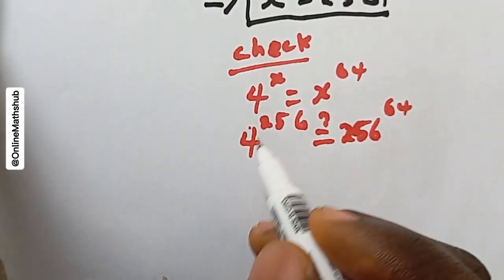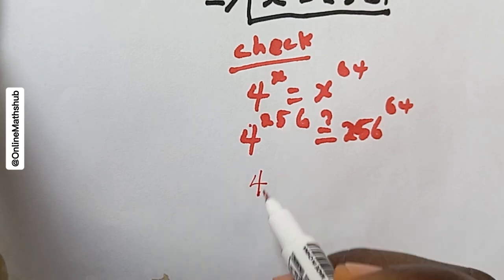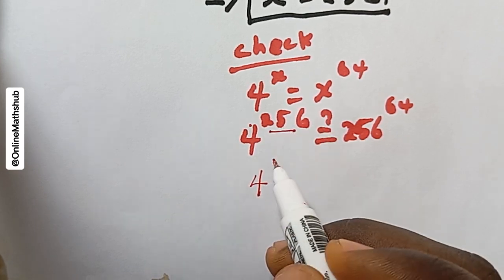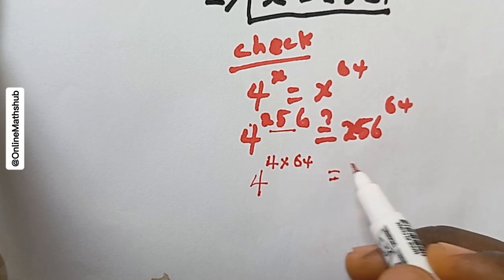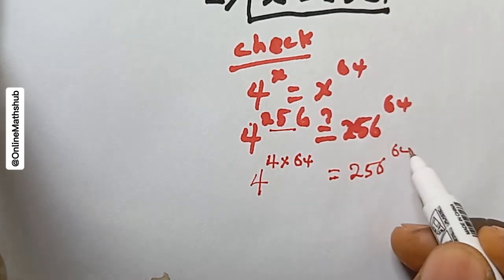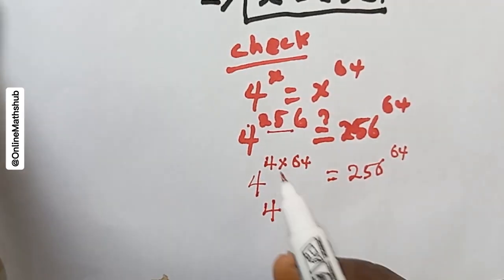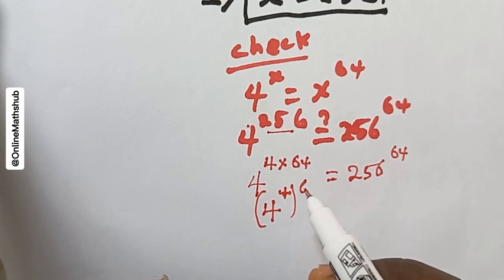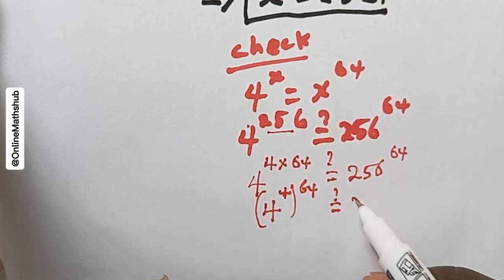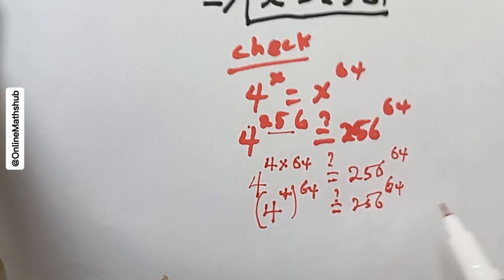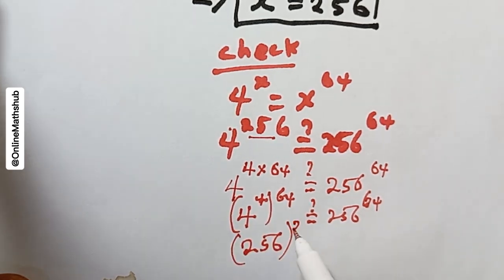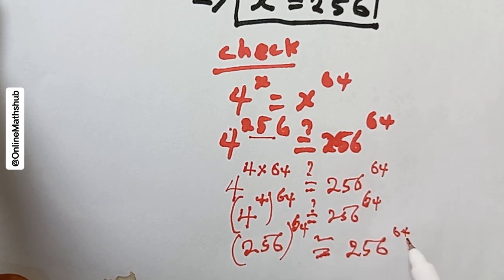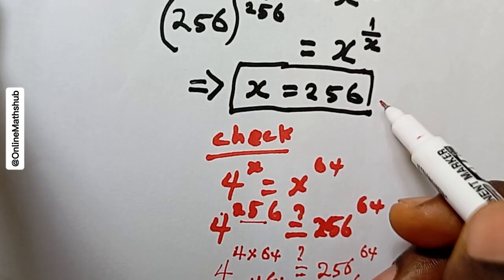Moving on, we simplify the left side. We can write 256 as 4 multiplied by 64, so 4 to the power 256 becomes 4 to the power of 4 times 64, which by the rules of indices can be written as 4 to the power 4, all raised to the power 64. Since 4 to the power 4 equals 256, this gives us 256 to the power 64, which is exactly equal to the right-hand side. This confirms that x = 256 satisfies the equation.